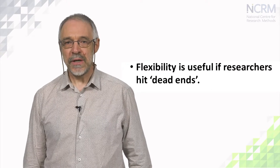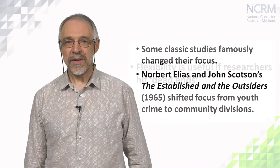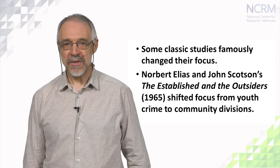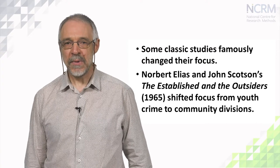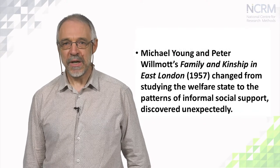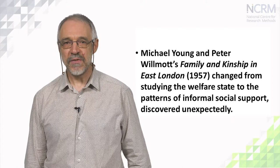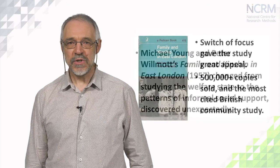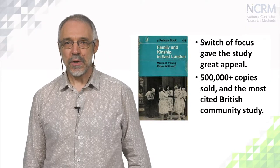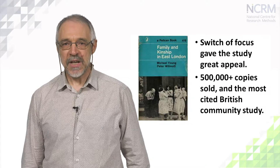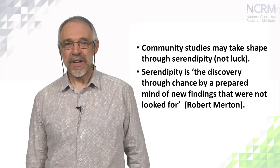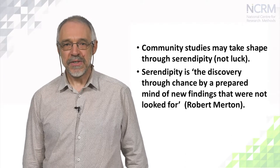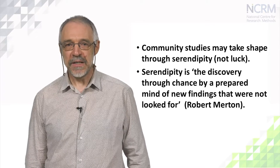Examples of studies that have changed their focus as they proceeded include some classics. Norbert Elias and John Scottson's The Established and the Outsiders shifted focus from youth crime to community divisions. Michael Young and Peter Wilmot's Family and Kinship in East London started off as a study of the welfare state, but then explored patterns of informal social support discovered unexpectedly. This switch of focus gave the study great appeal — more than half a million copies of the book were sold and it became the most cited British community study. There are many other examples of community studies taking shape through serendipity, which is not the same thing as luck. Robert Merton said serendipity is the discovery through chance by a prepared mind of new findings that were not looked for.